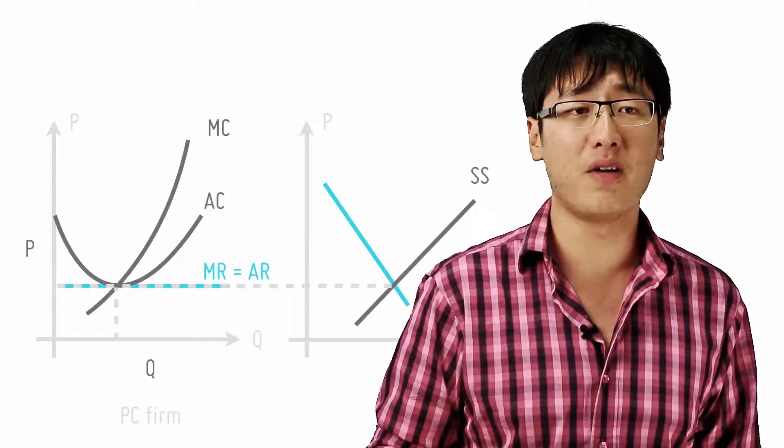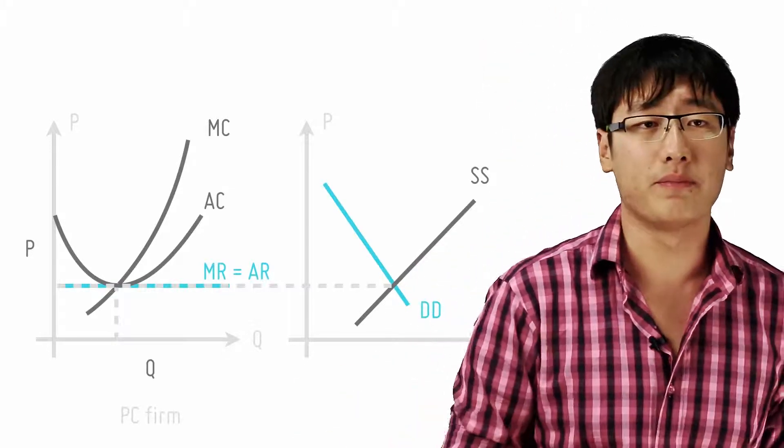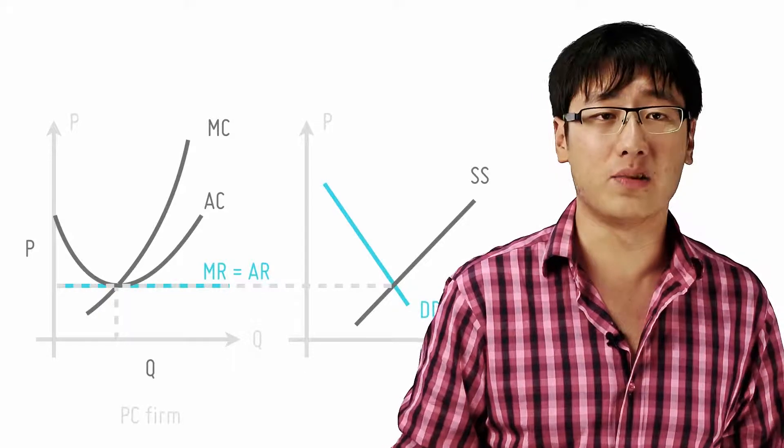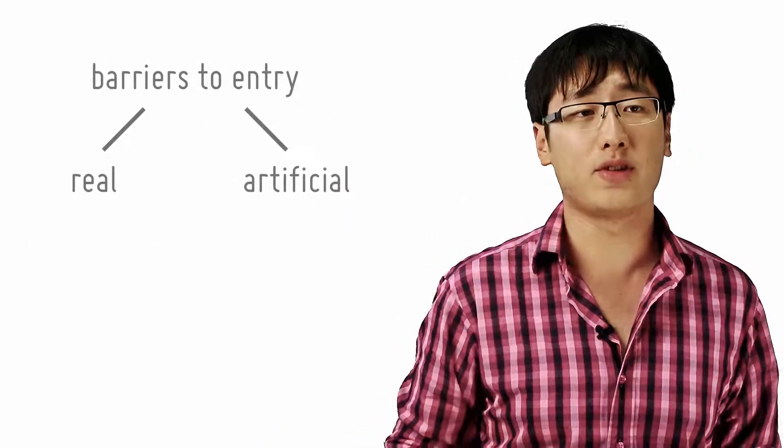So retaining supernormal profits depends on the freedom of entry or the extent of the barrier of entry of a new firm. Now there are real barriers to entry to prevent people from taking away the monopoly's profits and there are artificial barriers to entry.